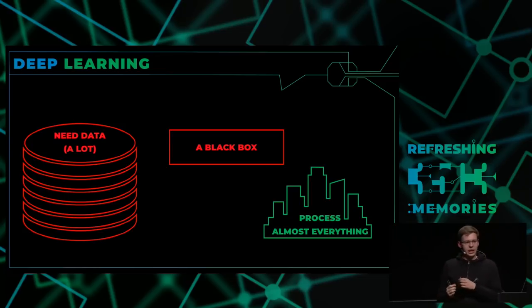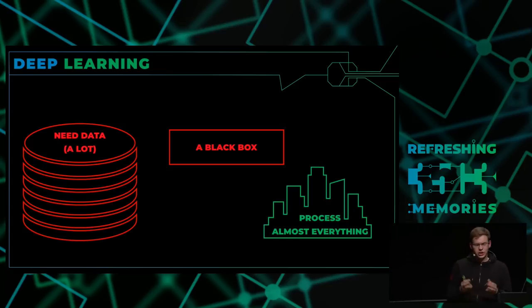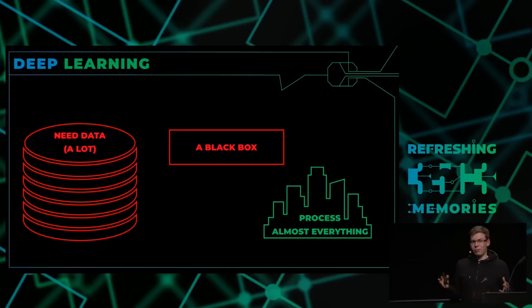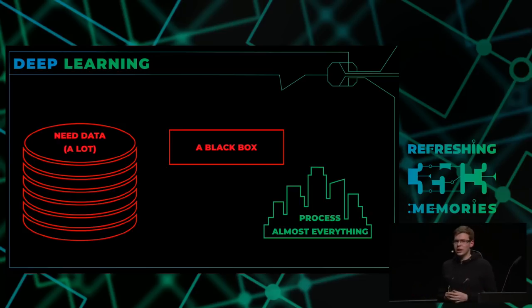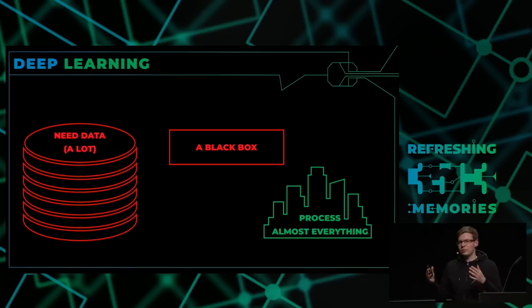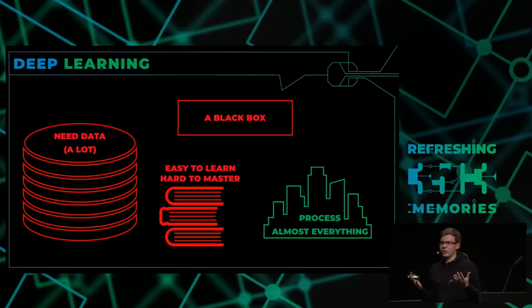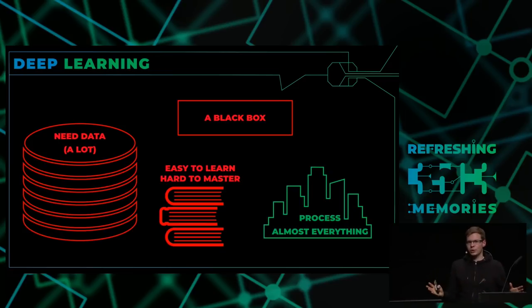Für uns als Computeringenieure ist es sehr schön, dass wir uns vorstellen können, was ungefähr die neuronalen Netze tun — zumindest die ersten paar Ebenen. Aber man kann nicht mathematisch beweisen, wie es funktioniert und was es tun wird. Das heißt, es kann sein, dass die Beispiele sehr gut funktionieren, aber man kann sich nicht sicher sein, dass es auch in Zukunft passieren wird.